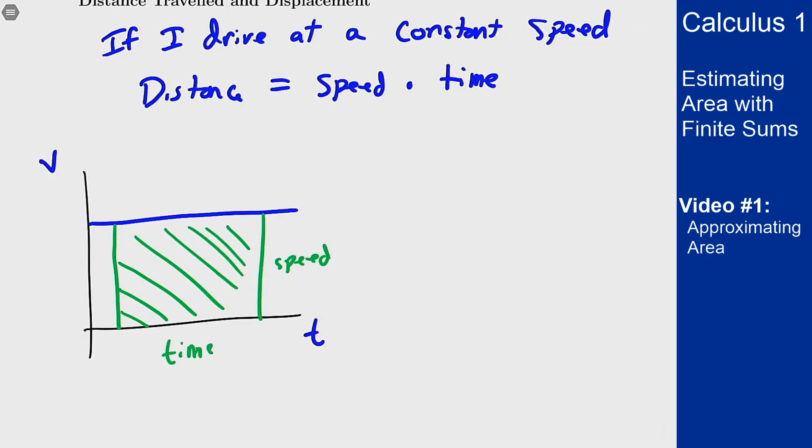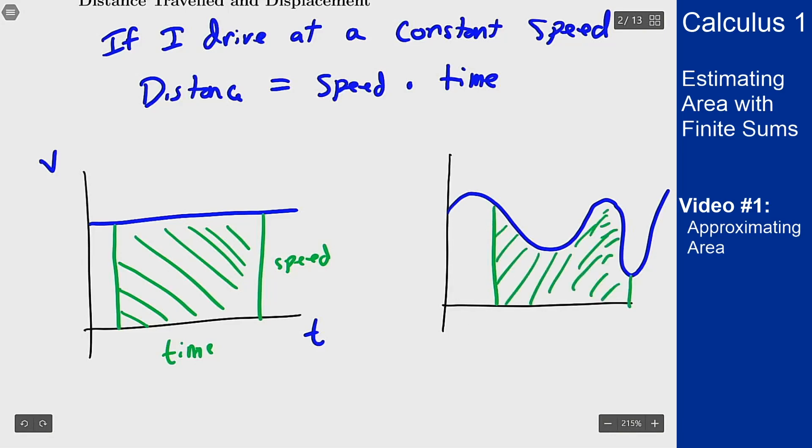However what happens if I'm driving at not a constant speed and my speed is changing as I travel? Well in that case I have a graph that looks something like that but I can still find my distance traveled by finding the area inside the curve here.